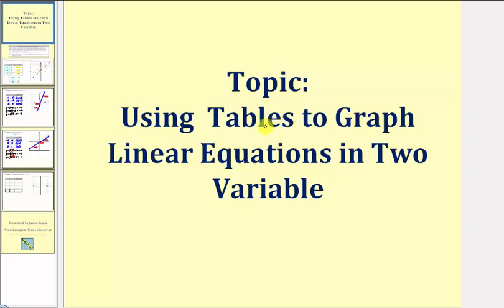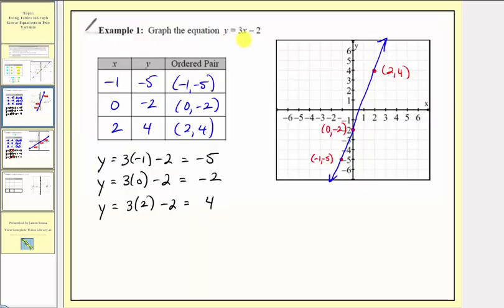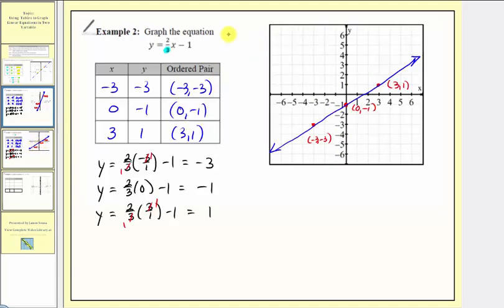Welcome to part two of our lesson on how to use a table of values to graph a linear equation in two variables. In part one we graphed the linear equation y equals three x minus two using a table of values, as well as y equals two-thirds x minus one using a table of values. For these two examples the equations were in what's called slope-intercept form.